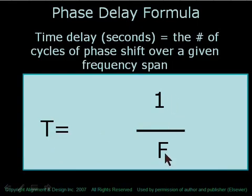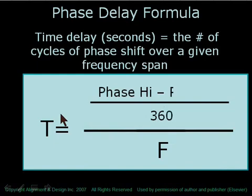The 1 in this formula will be replaced with the change in phase over 360, which gives us the number of wavelengths of delay over frequency.